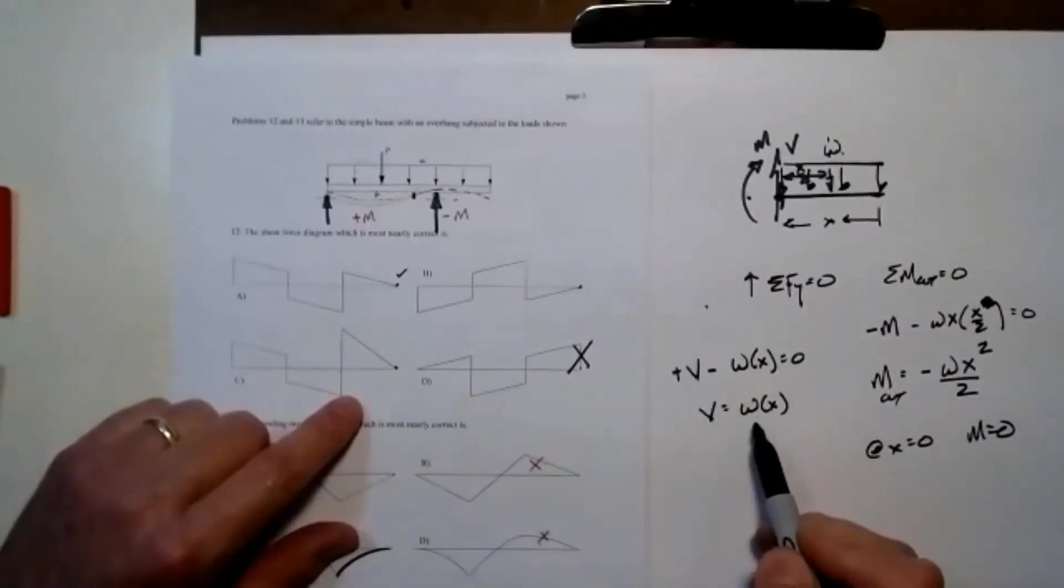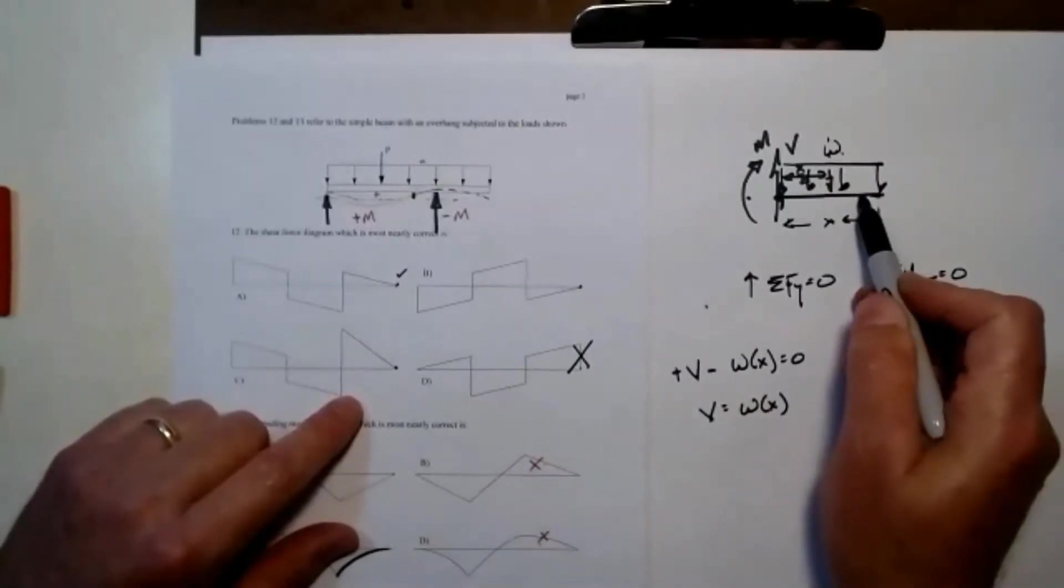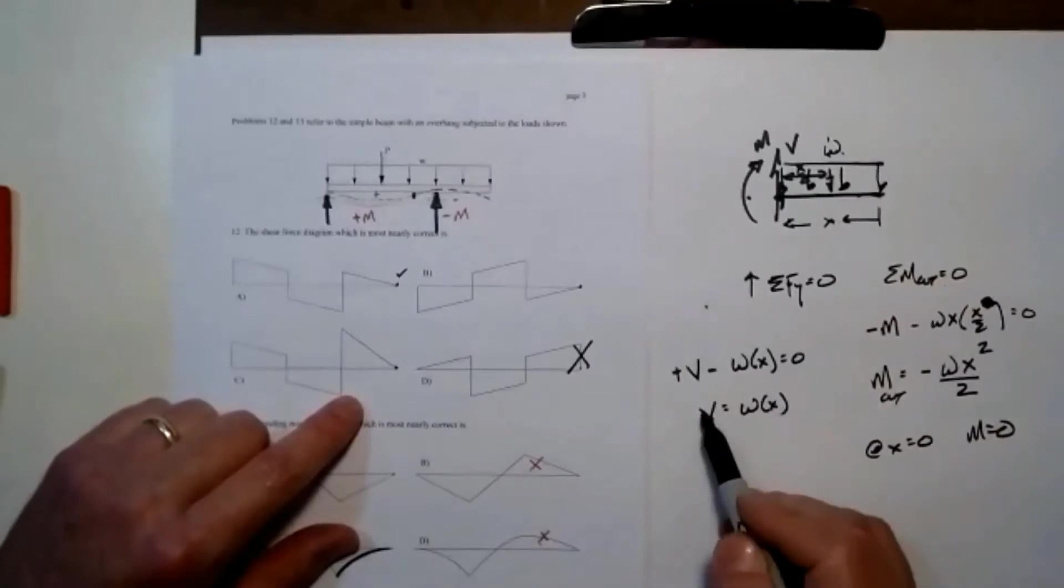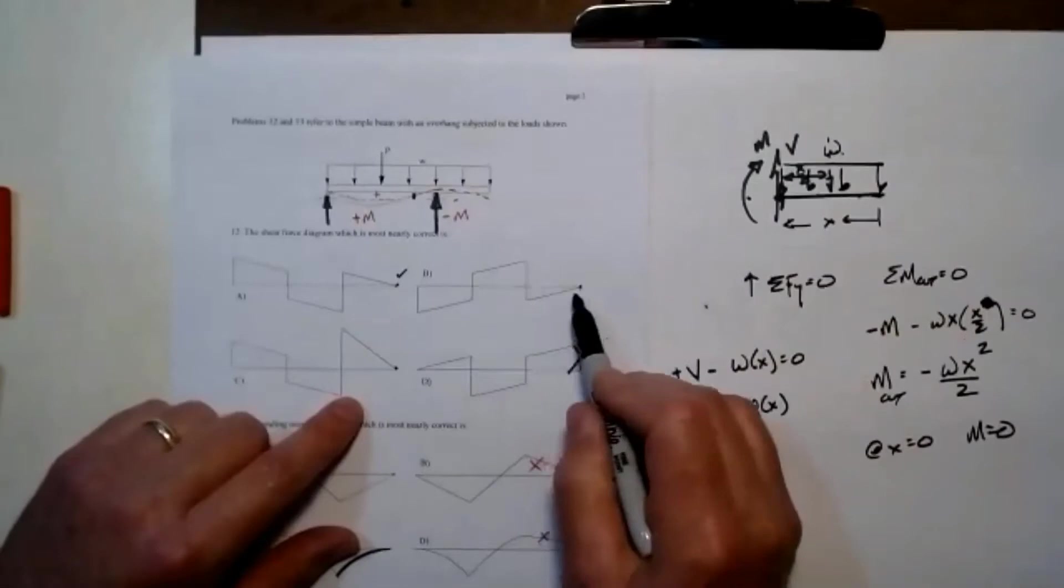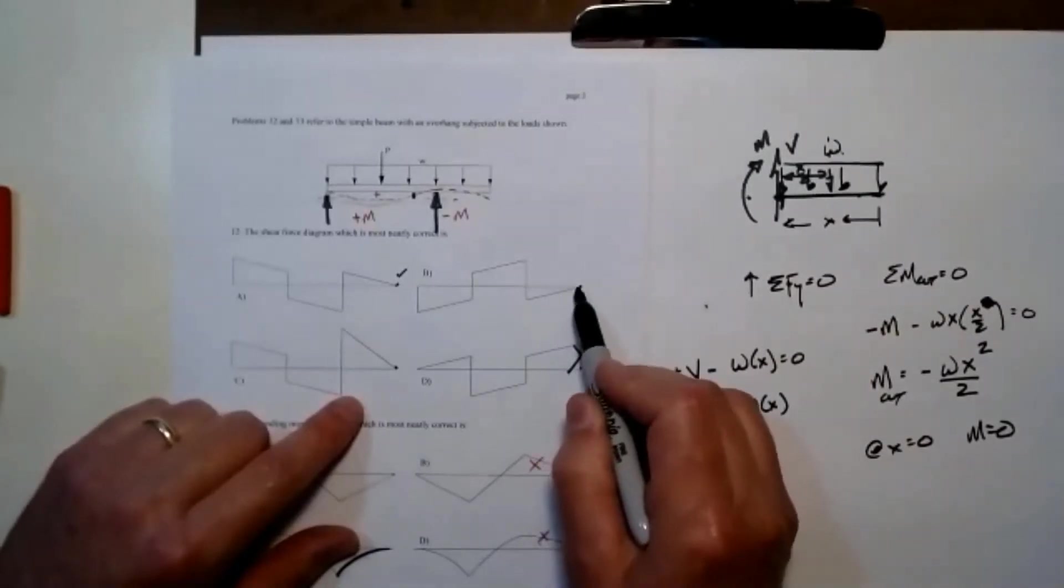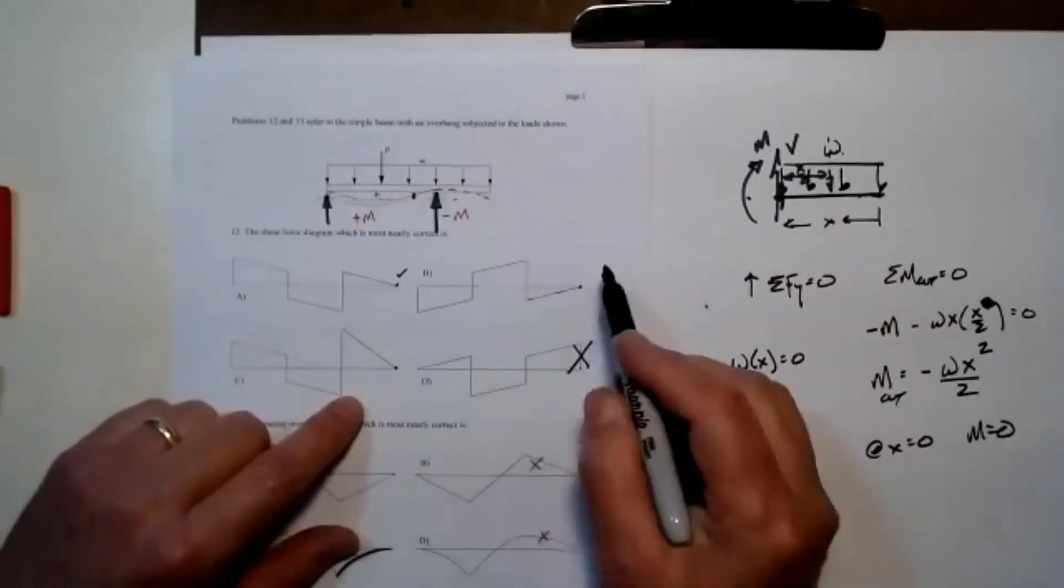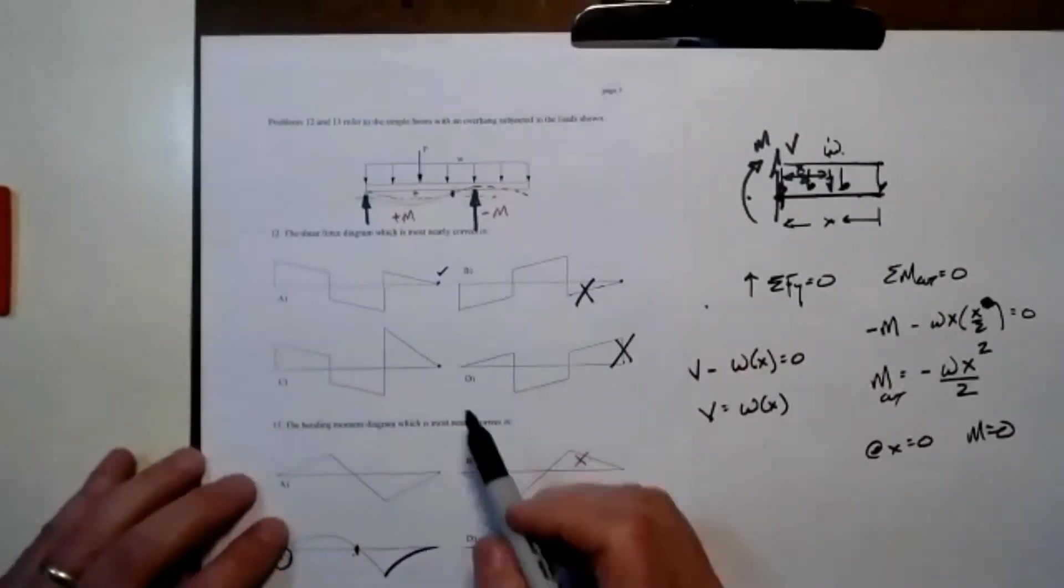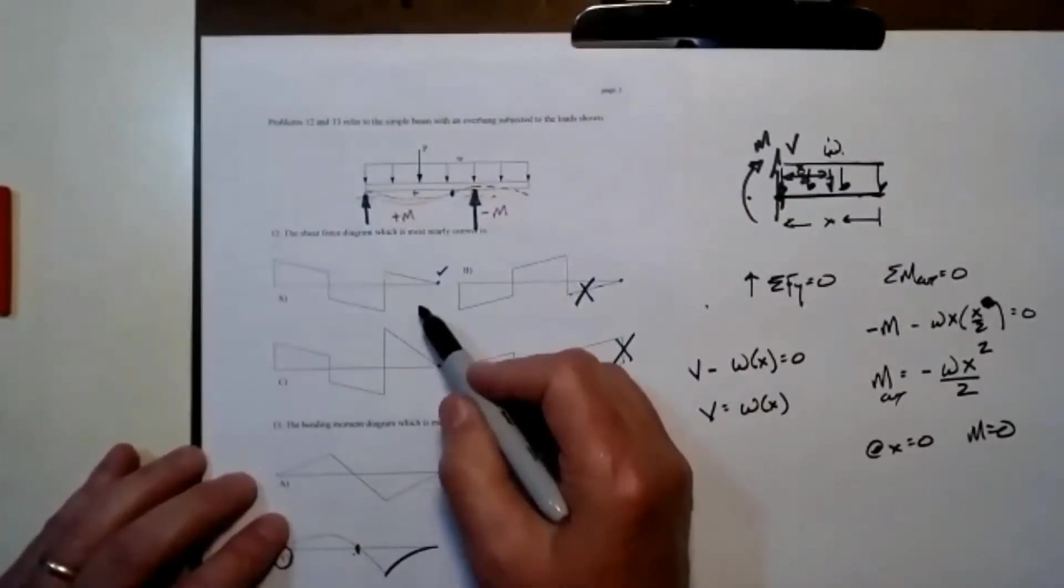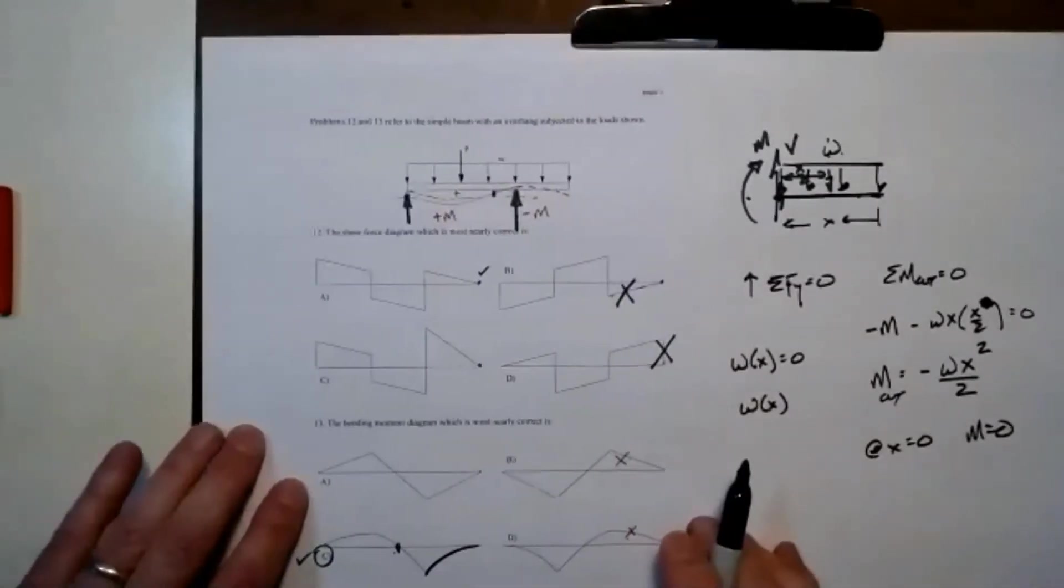As I move away from the free end, my magnitude of shear increases, but it becomes more positive. So this one is it. As I move away from the free end and it becomes more negative, can't be that one. So now I'm down to these two.